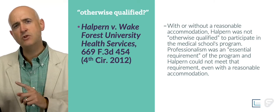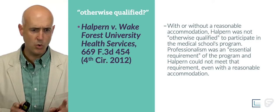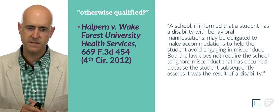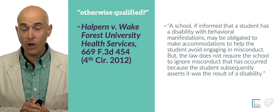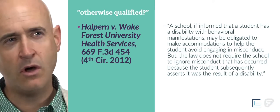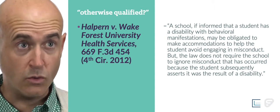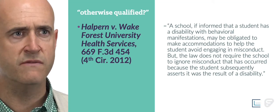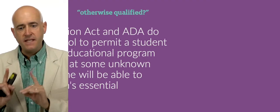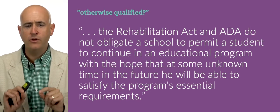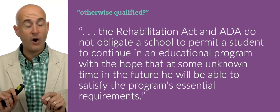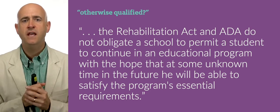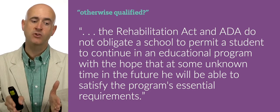The court provides instructive language: a school, if informed that a student has a disability with behavioral manifestations, may be obligated to make accommodation to help the student avoid engaging in misconduct. But the law does not require you, the school, to ignore misconduct that has occurred because the student subsequently asserts it was the result of a disability. Essentially, the Rehabilitation Act and ADA don't obligate a school to permit a student to continue in an educational program with the hope that at some unknown time in the future he might be able to satisfy essential requirements.